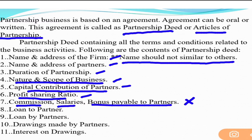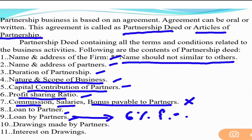Loan to partner — whether the firm can give a loan to a partner, and if yes, any limit on that must be decided in advance. Loan by a partner — if a partner gives a loan to the firm, how much percent interest will he get from the firm must be declared in the deed. If this clause is not declared, by default 6% per annum interest will be given, regardless of the market rate.